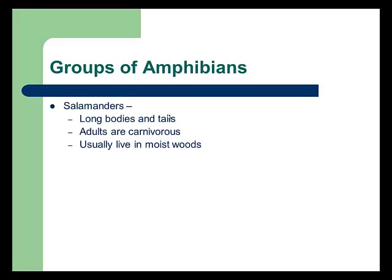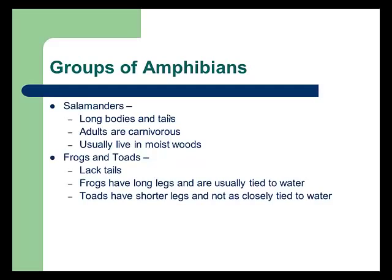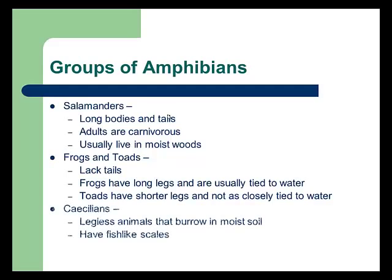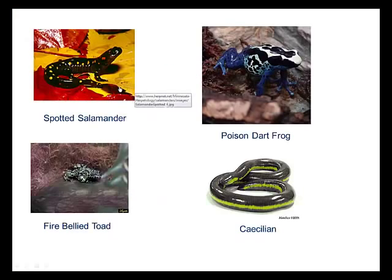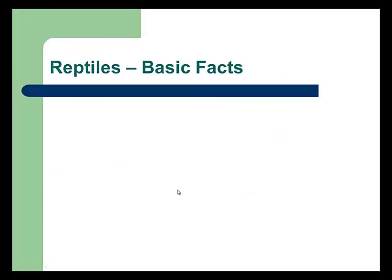Groups of amphibians include salamanders, frogs and toads, and caecilians — basically legless animals that burrow in moist soil. Here's a spotted salamander, a caecilian that looks somewhat like a snake, a poison dart frog, and a fire-bellied toad.